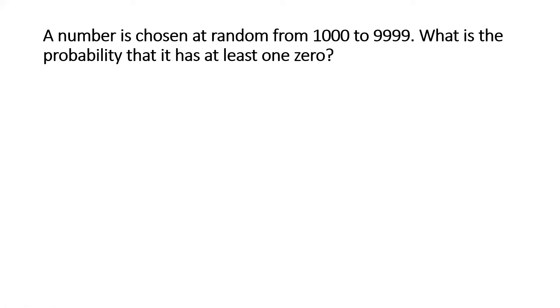A number is chosen at random from 1000 to 9999. What is the probability that it has at least one zero? A variation of this problem was asked in SAT, I believe, and this is considered one of the hard problems that you can get on probability and permutation combination in SAT or other standardized tests.